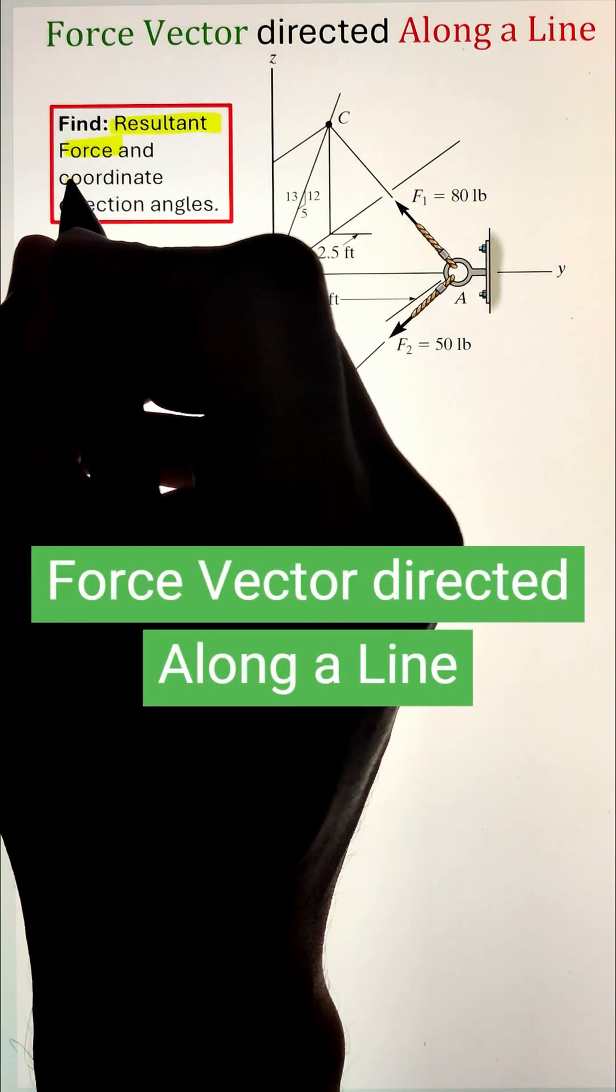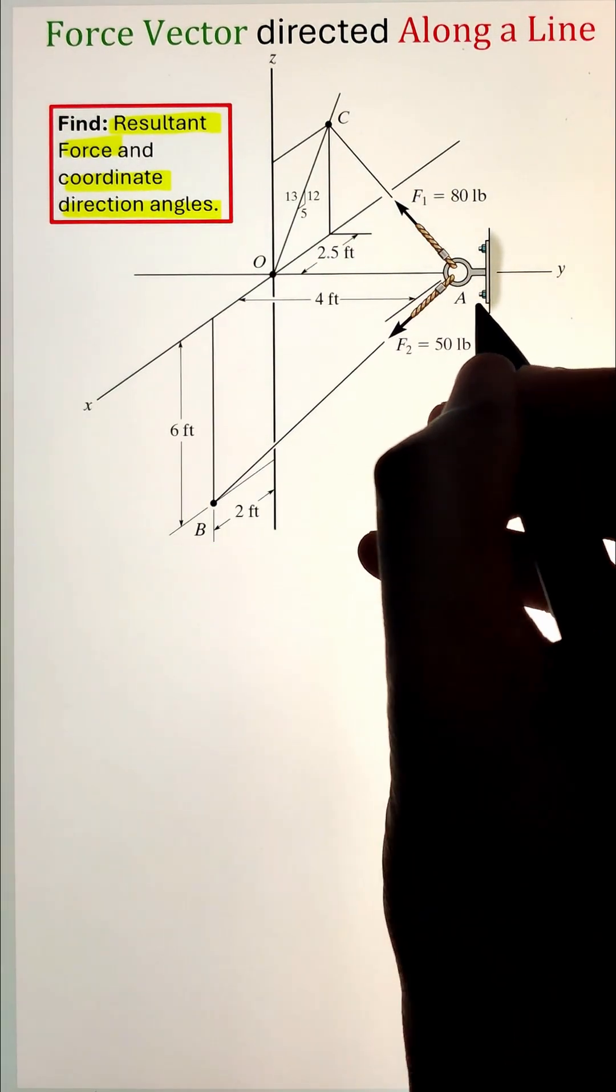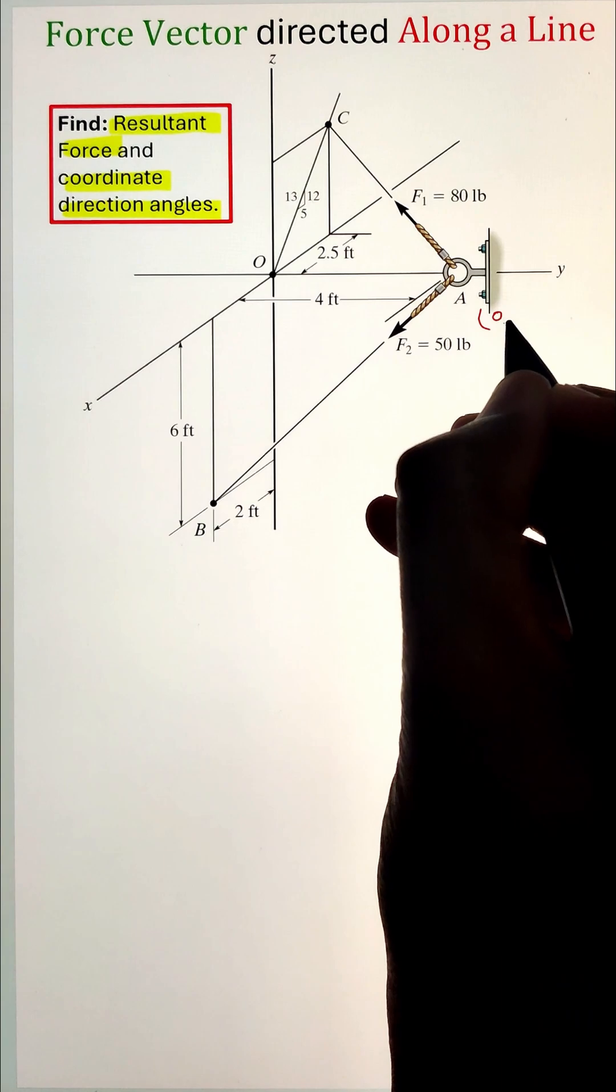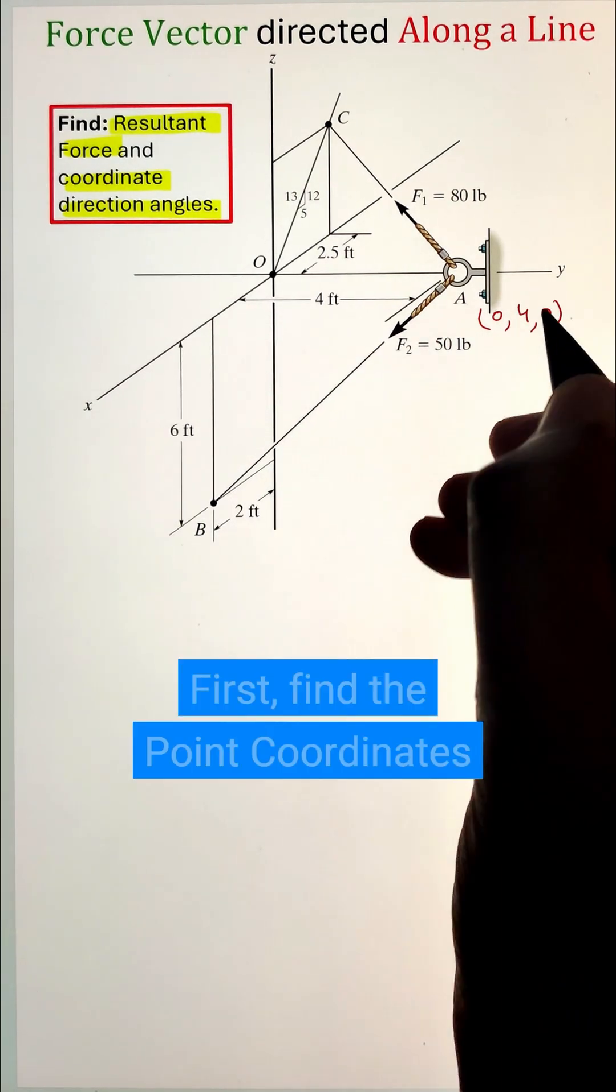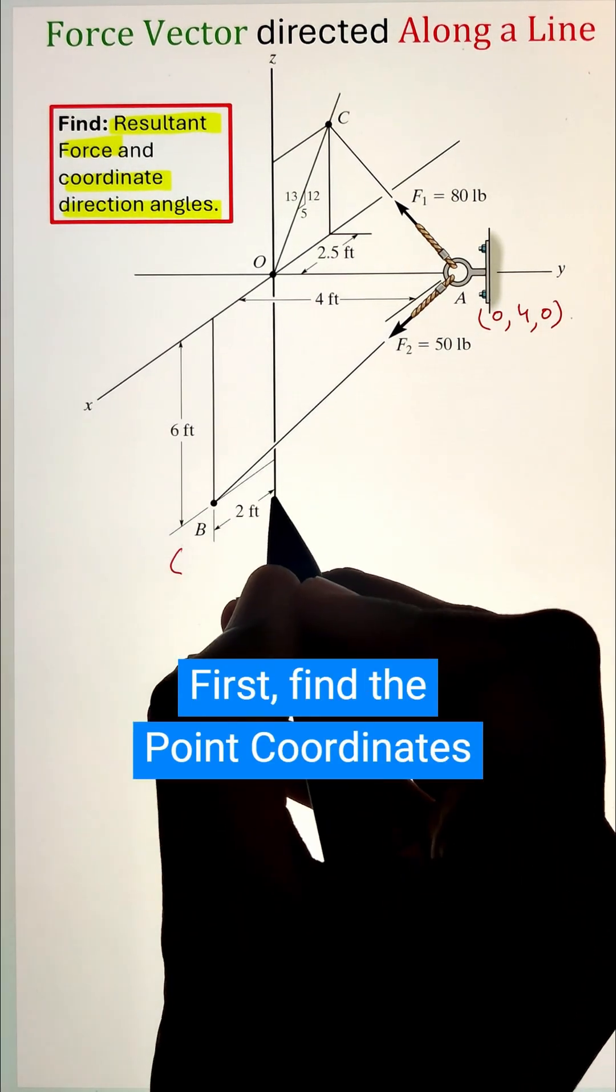In order to find the resultant force and coordinate direction angle of the couple of forces acting along the line, we can start by first figuring out the point coordinates of the head and tail of the force vector.